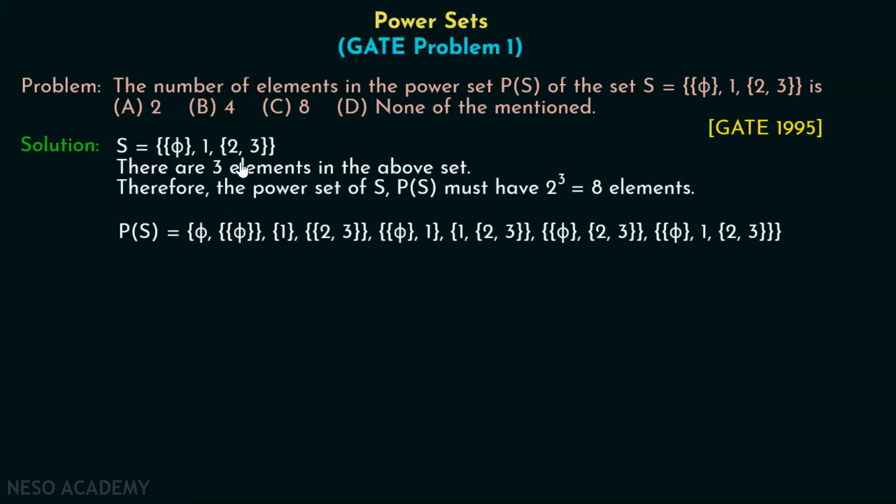After this, we will include 2 elements in the set. First, we will include these 2 elements within a set. Then we will include these 2 elements, as you can see over here. Then we will include these 2 elements, first and third, and this is how it looks like.